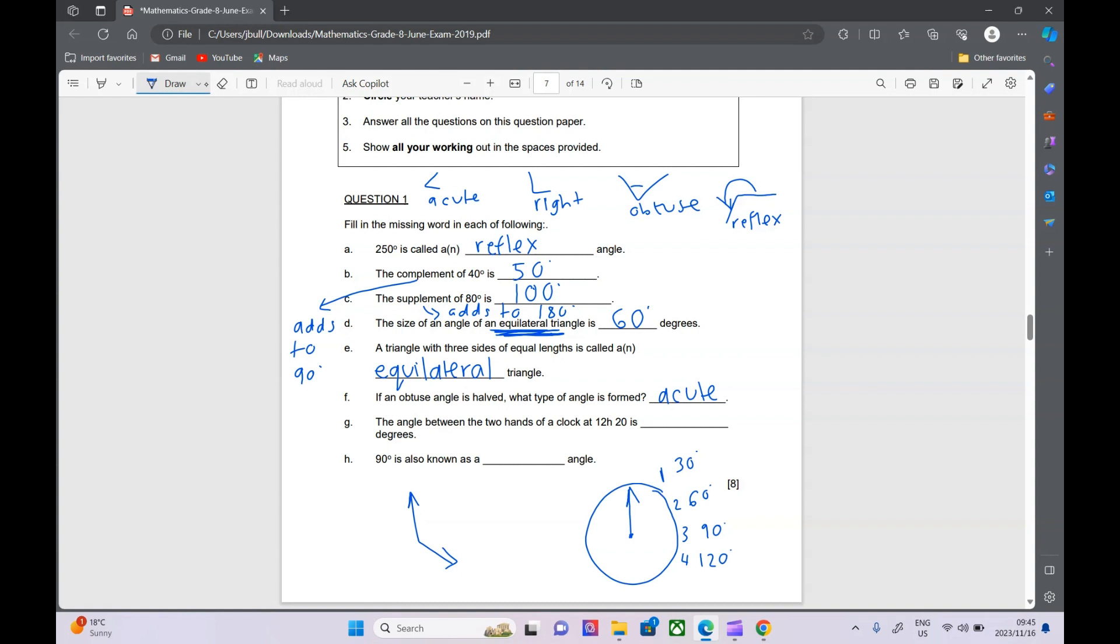So we can say then the angle between the two hands - if we went from this 12 o'clock here to the 12:20, that would be 120 degrees that we've moved there. And 90 degrees, we also call it just a right angle. That's a word that they use a lot. So that one you definitely have to know. Let's keep going.